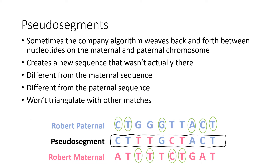When talking about false matches, it's helpful to understand the concept of pseudo segments. The company algorithm weaves back and forth between nucleotides on the maternal and the paternal chromosome, looking for matches with other people with that same sequence. When that happens, this creates a new sequence that wasn't actually there — a pseudo segment. It's not the actual segment on your paternal or maternal chromosome; it's a mix of the two, and therefore it's not going to triangulate with other matches in that same spot.